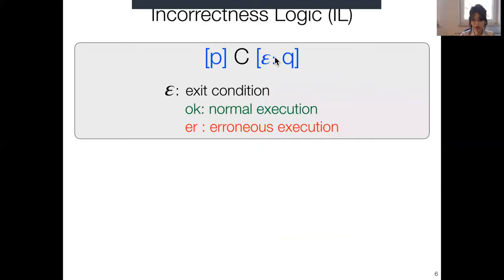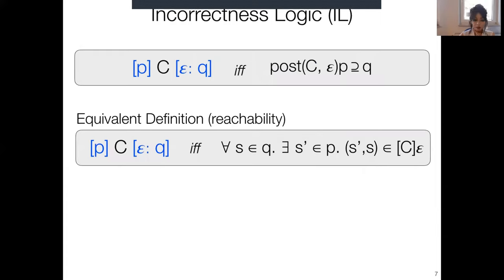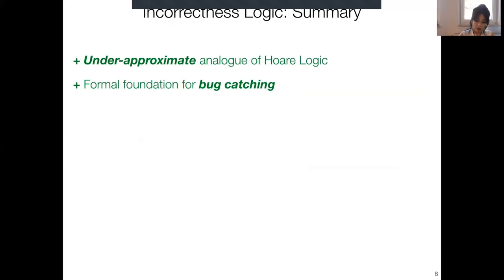There's an extra notation in incorrectness logic: exit conditions epsilon, which denote how execution happened — either 'ok' for normal execution or 'error' for erroneous execution. For instance, if I assign y to x and y has value b, I can show that the state where x and y both equal b is reachable. Similarly, if I have an error statement, I can show an erroneous execution reaching a state satisfying P, provided the initial state also satisfies P.